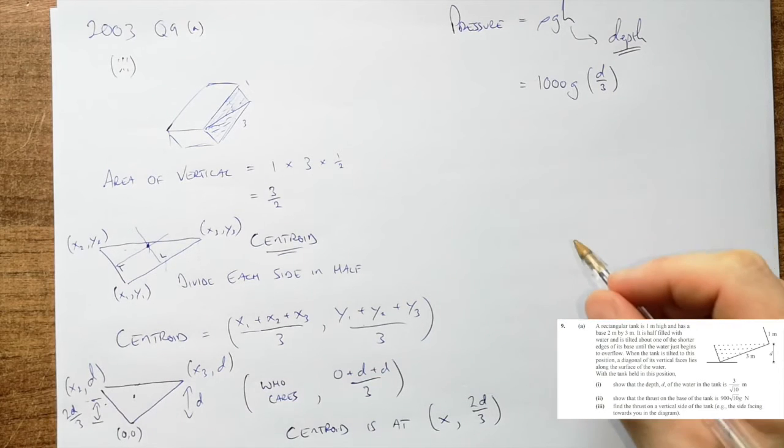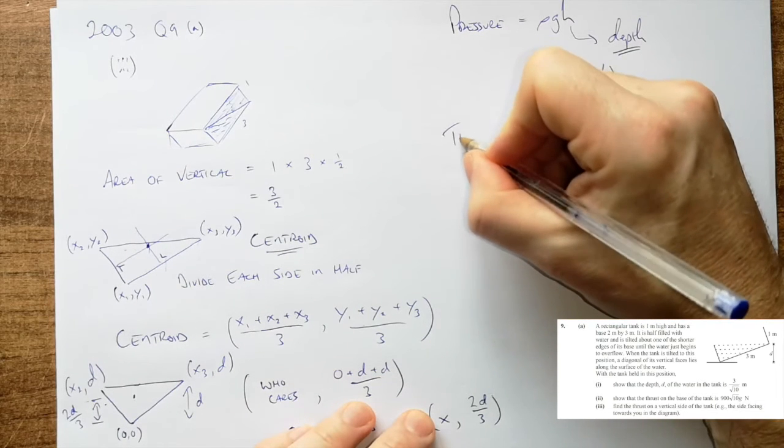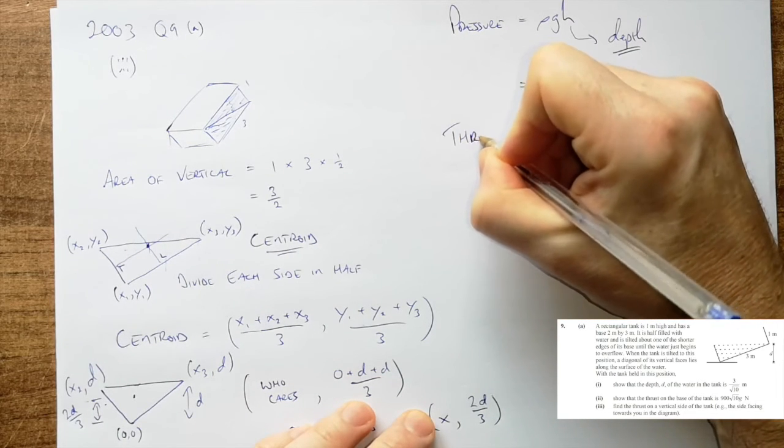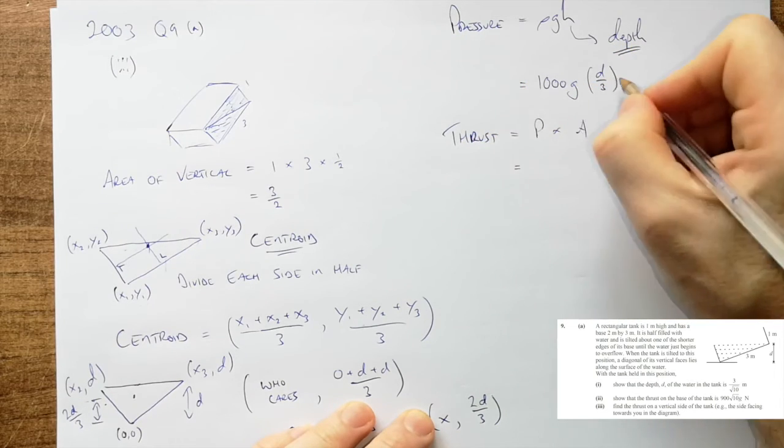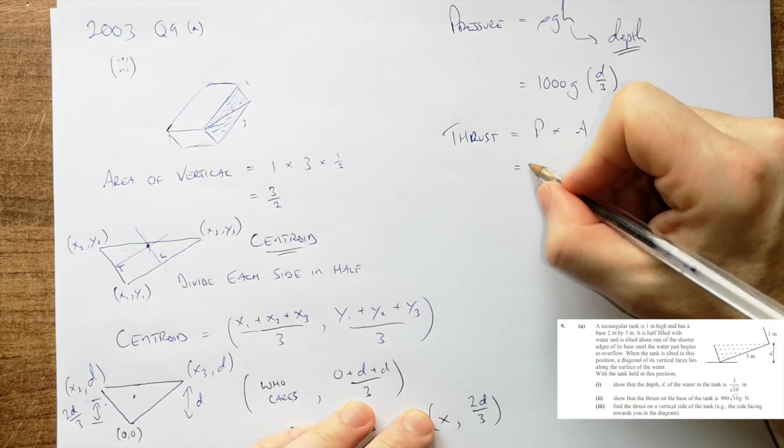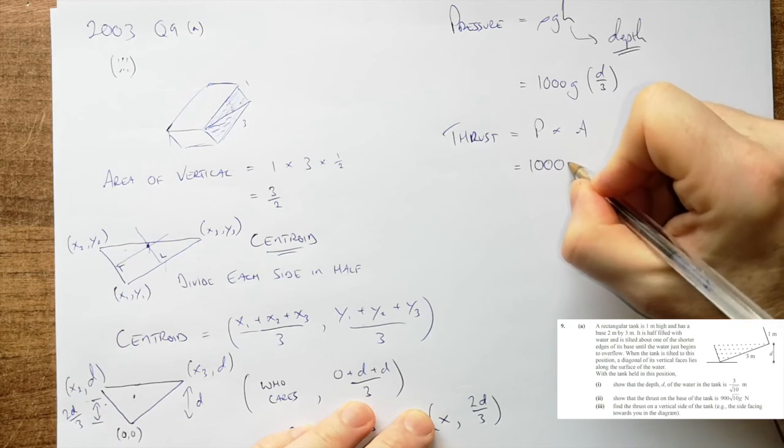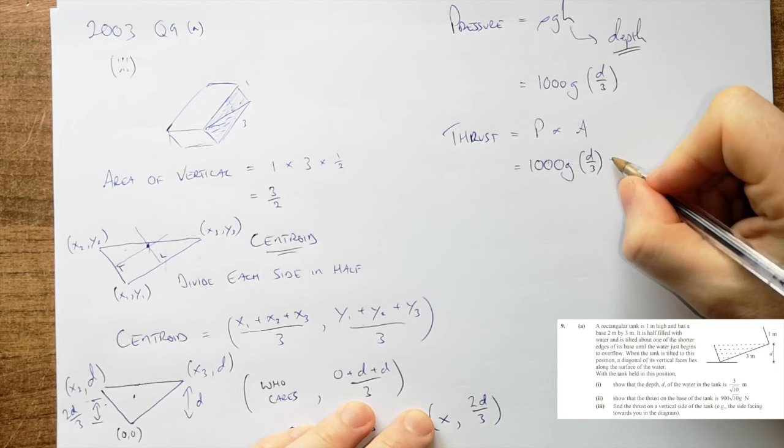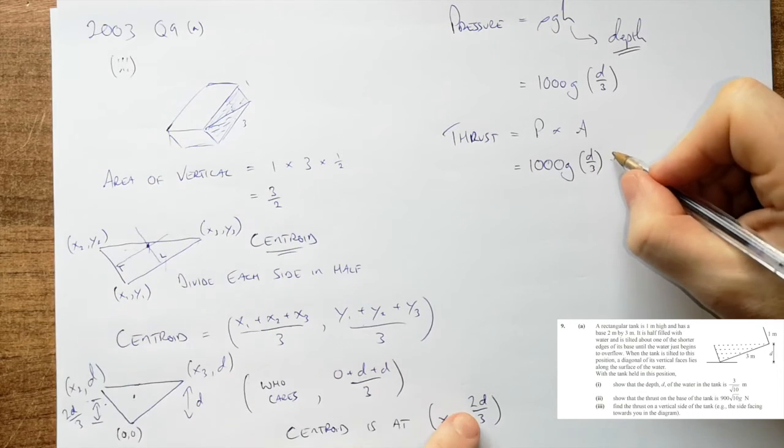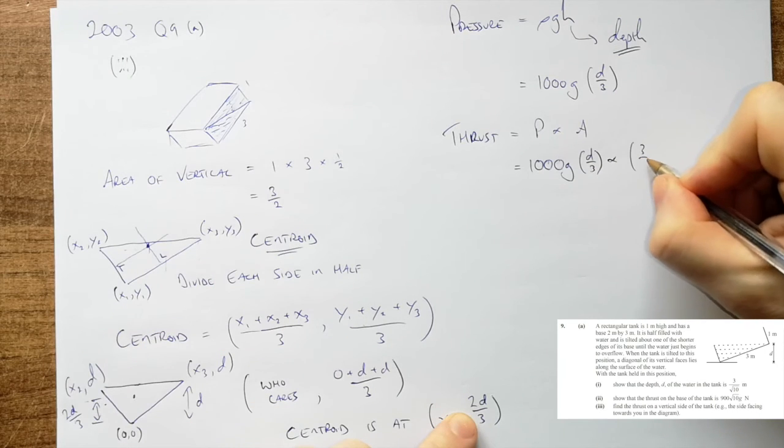Now that we have that one we can figure out our thrust. It becomes fairly easy. Thrust is pressure by area. So that is, take this one here, it's 1000 g by d over 3, and multiply by our area, and that was 3 over 2.